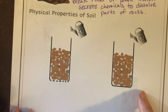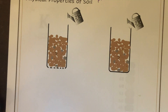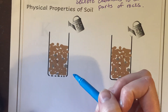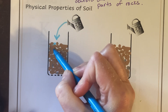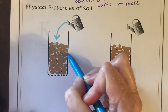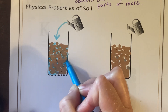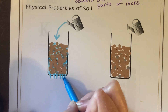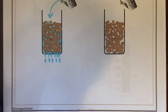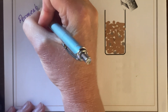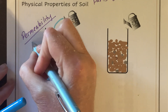Now let's talk about some physical soil properties. We talked about permeability. If we pour water in, it's going to fill up all the spaces in between soil particles and then drip through the bottom. Permeability is the drainage rate of soil — it's how fast the water drains through.